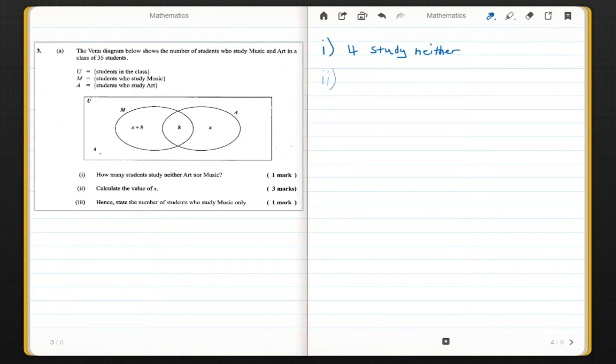So I should eliminate 4 from our total which is 35. 35 minus 4 gives me 31. So 31 students study art and music. Now we want to work out x.